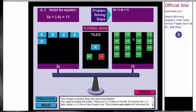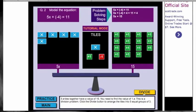Now we have 5x equals 15, but we need to get 1x by itself. In order to do that we are going to divide each side by 5.